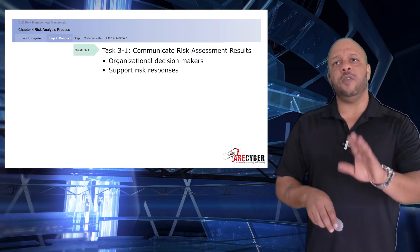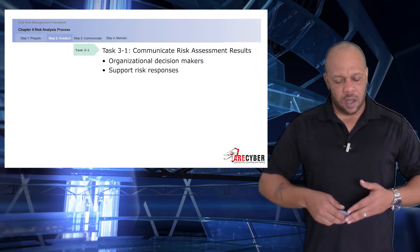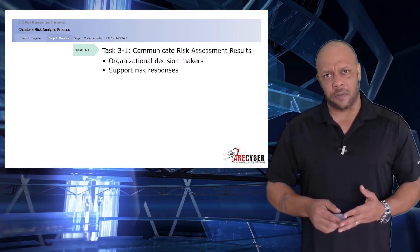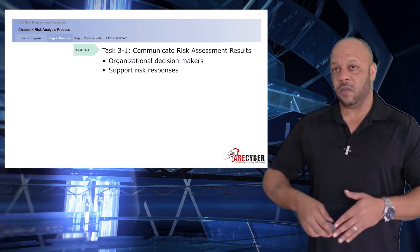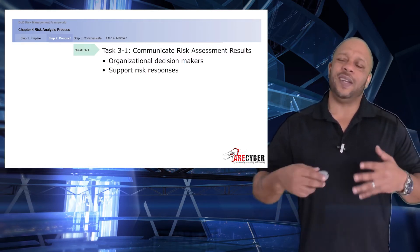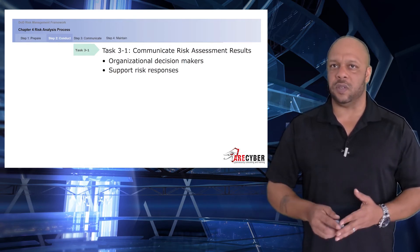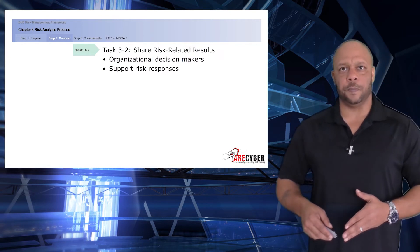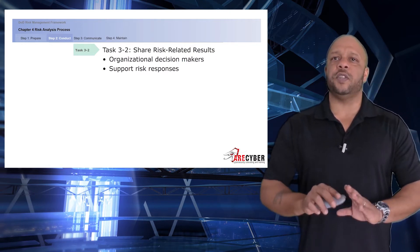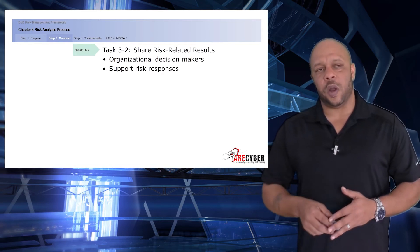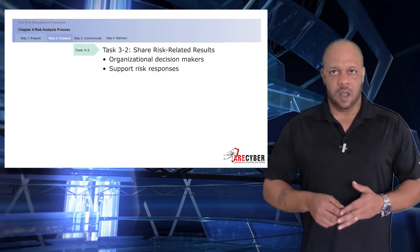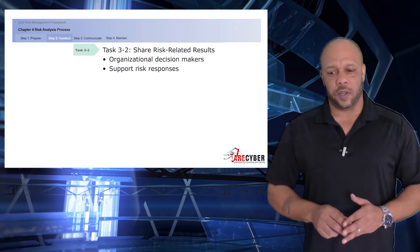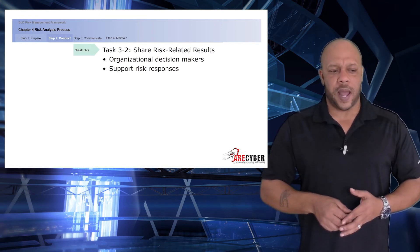Next, we communicate the risk assessment results. It doesn't do us any good to do all the assessment work and keep it to ourselves. This is where we present the total risk assessment, or at least the preliminary risk assessment, to the organizational decision makers so they can begin to identify and support risk responses. It's important to share the risk-related results through the executive risk function, made up of the organizational decision makers and the security subject matter experts across all disciplines.